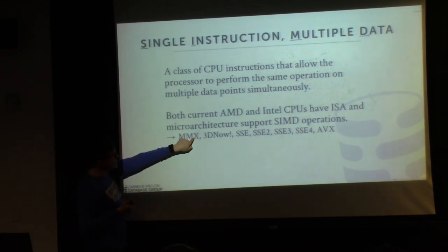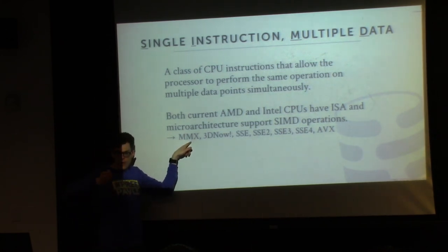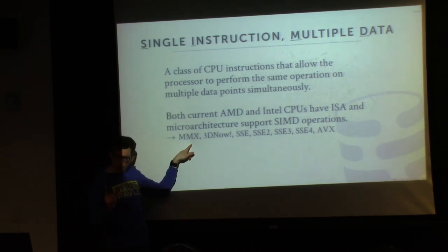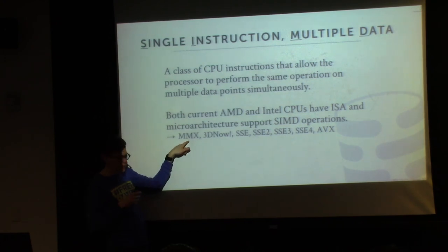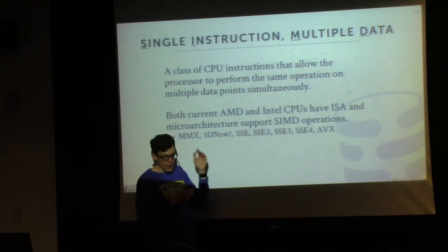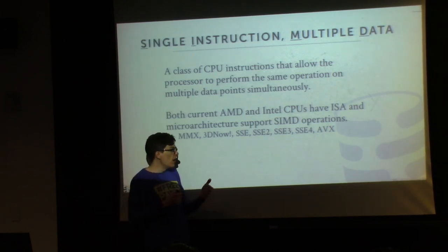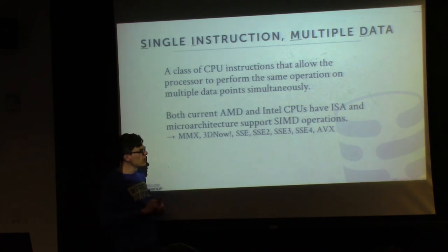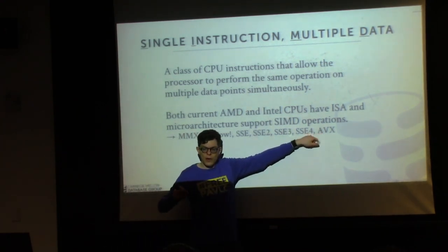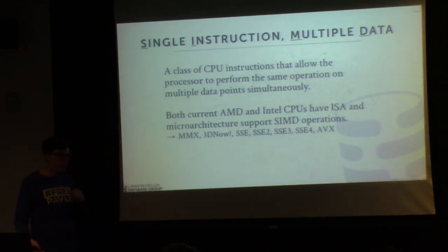In these early incarnations of SIMD on Intel's chips, they were actually pretty bad. The problem was whenever you invoked a SIMD instruction, it would block the CPU from running regular instructions. The later versions — SSE, SSE2, and SSE3 — added support for doing instructions in parallel with the CPU while it did other things, because they had better support for out-of-order execution. Now, when people talk about SIMD, they talk about using AVX256 or 512.